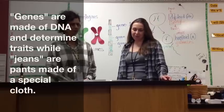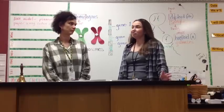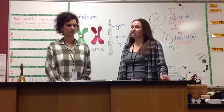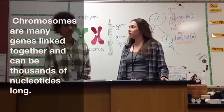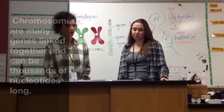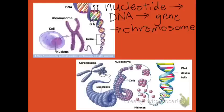How do chromosomes then fit into the picture? Chromosomes are many genes linked together, so they can be thousands of nucleotides long. These two diagrams show how nucleotides combine to form DNA, and that many molecules of the nucleotides combine together to form genes, and the genes linked together to form chromosomes. The basic unit is the nucleotide.